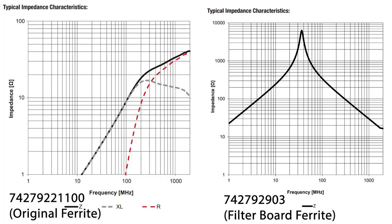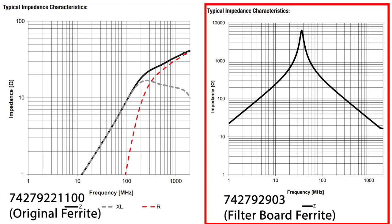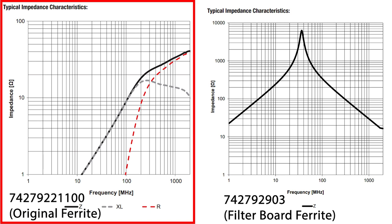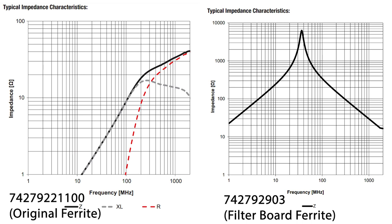The ferrite used on the filter board starts to show around 20 ohms of impedance at 1 megahertz, and then it rapidly increases as the frequency increases. The original ferrite that's on the buck converter board doesn't really start to show any impedance until around 10 megahertz. Remember, since these are series elements, the higher the impedance at a specific frequency, the more effectively it's going to block noise at that frequency.